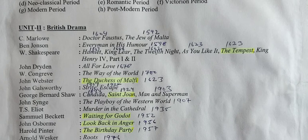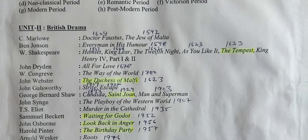John Dryden — All for Love (1678). William Congreve — The Way of the World. John Webster — The Duchess of Malfi. John Galsworthy — Strife and Escape.